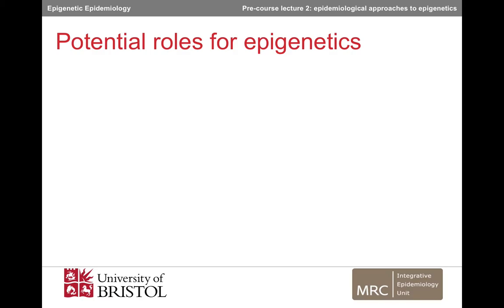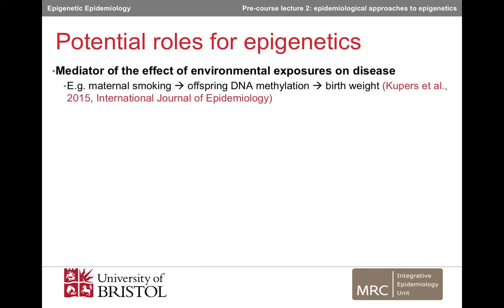Epidemiological approaches are increasingly being used to help us understand the role of epigenetics in health and disease. There is huge research potential here because there are many possible roles for epigenetic mechanisms. Firstly, they might play a causal mechanistic role in mediating the effect of environmental exposures on disease. For example, there's some evidence that DNA methylation mediates the effect of maternal smoking on low birth weight.